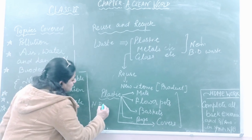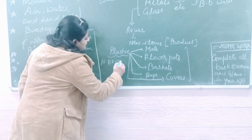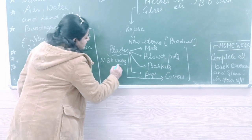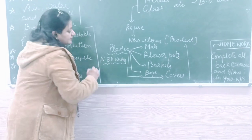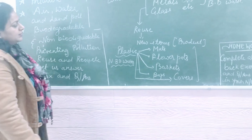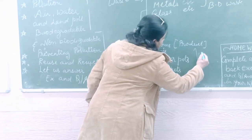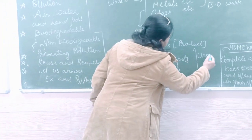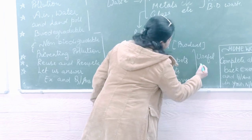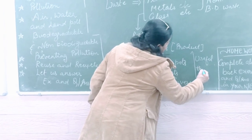Because plastic is a non-biodegradable waste, it cannot mix with soil and it is very harmful for our environment. These are very useful things that we can make with the help of plastic.